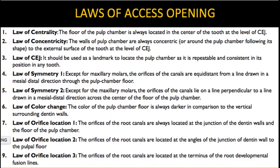Coming to the laws of access opening — there are around 9 laws. The first law is the Law of Centrality, which states that the floor of the pulp chamber is always located in the center of the tooth at the level of your CEJ. The Law of Concentricity states that the walls of the pulp chamber are always concentric to the external surface of the tooth at the level of CEJ. The Law of CEJ states that the CEJ should be used as a landmark to locate the pulp chamber as it is repeatable and consistent in its position in any tooth.